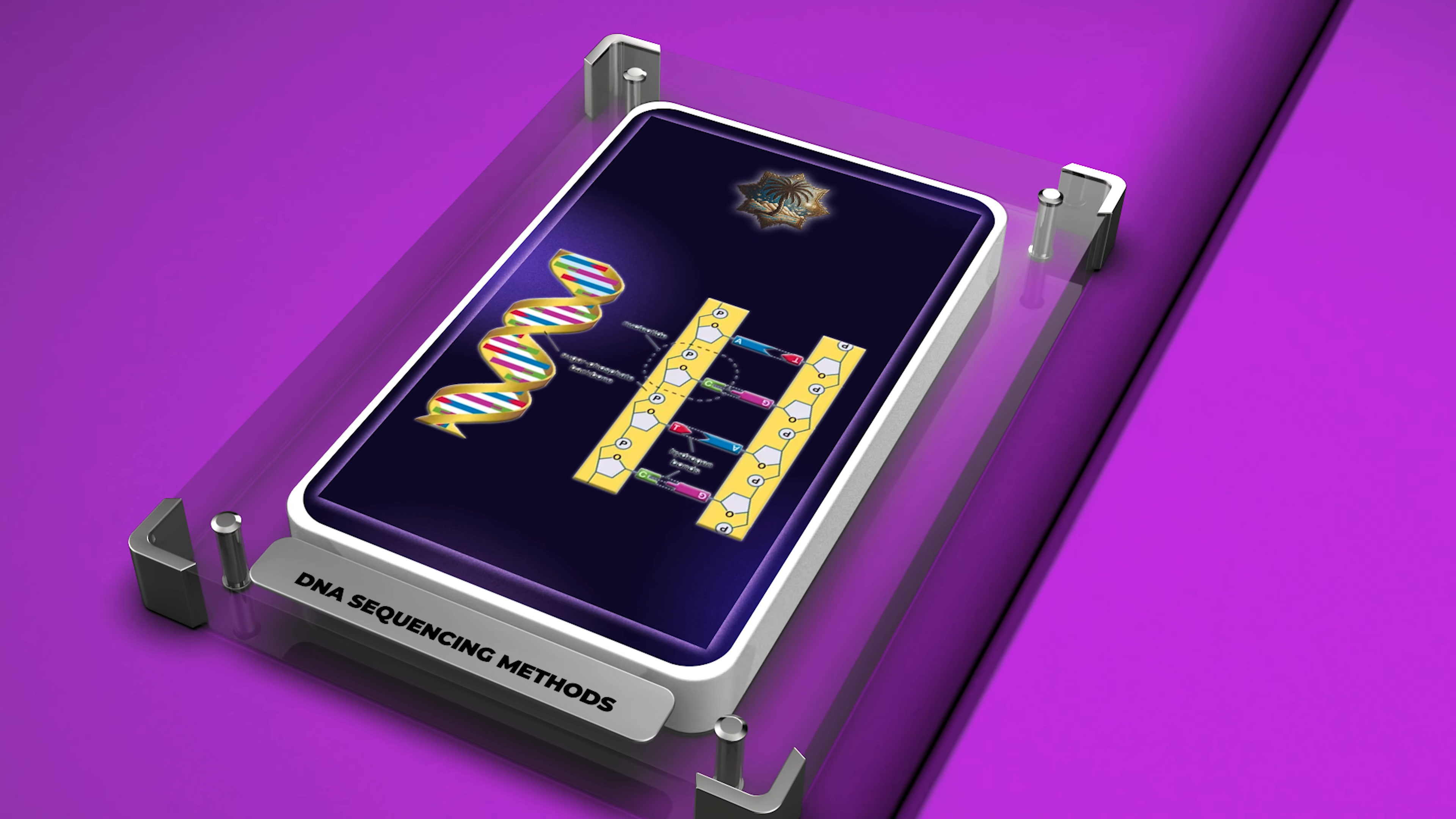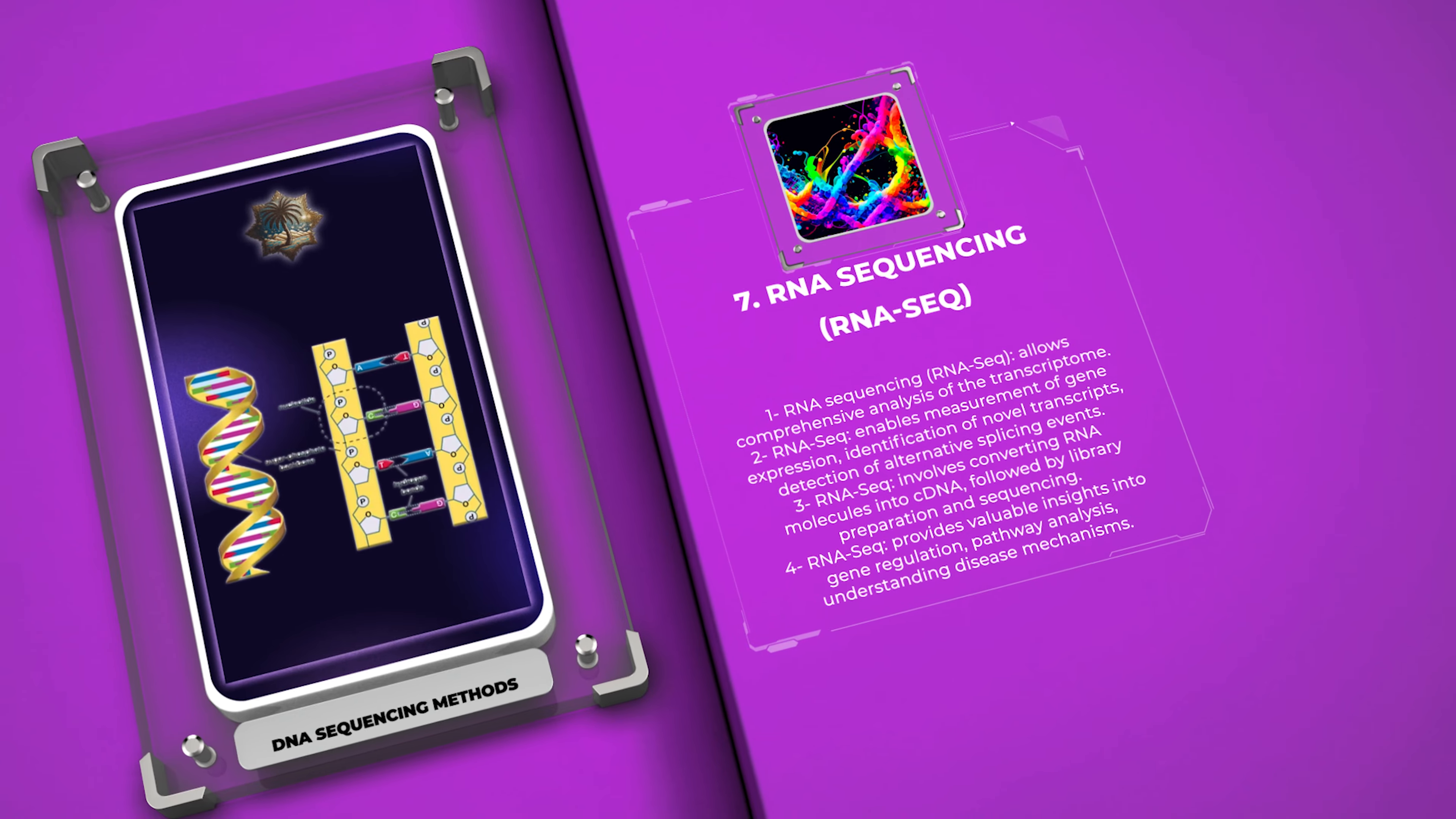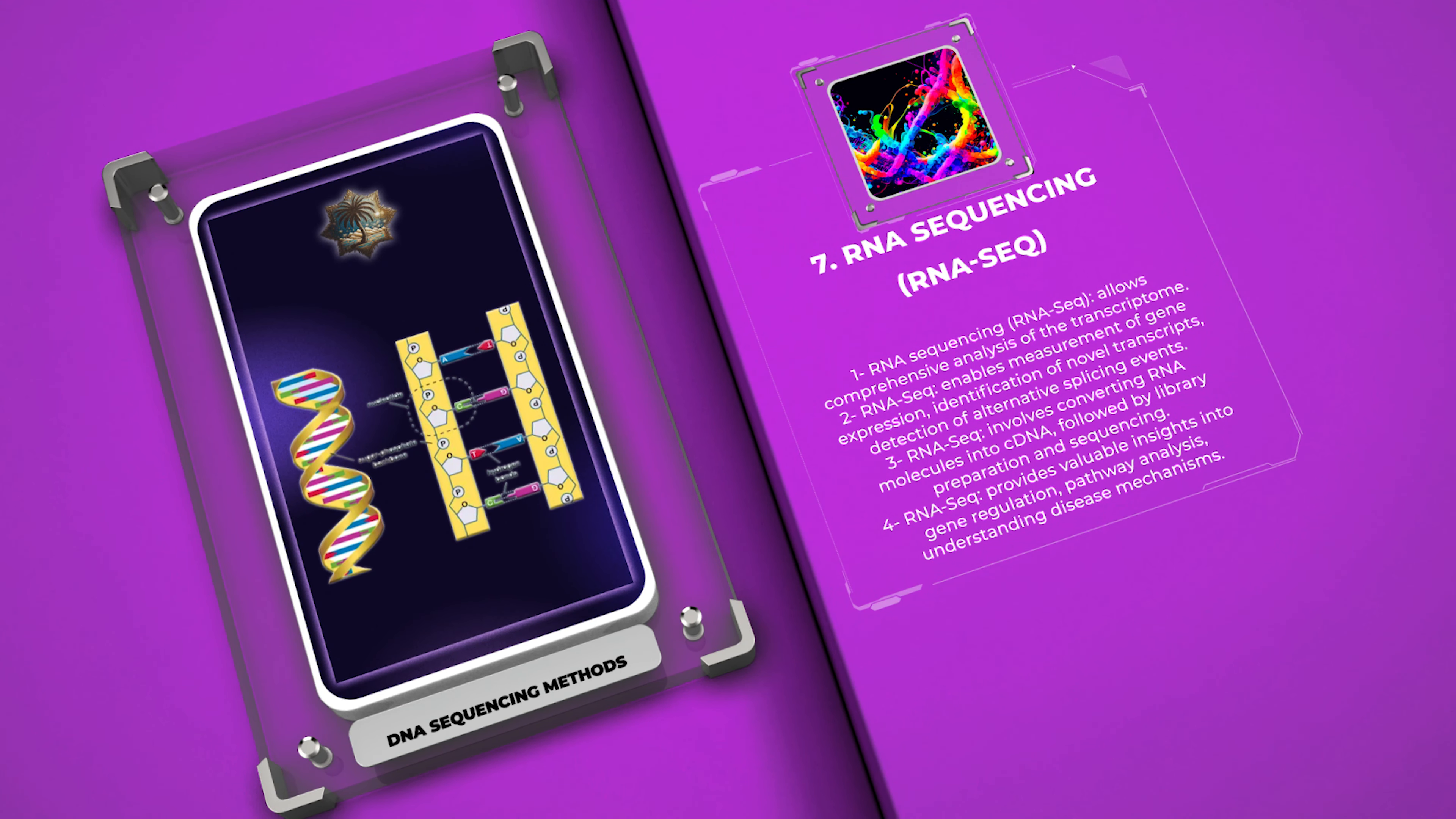RNA sequencing, commonly known as RNA-seq, allows the comprehensive analysis of the transcriptome by sequencing RNA molecules. This technique enables the measurement of gene expression, identification of novel transcripts, and detection of alternative splicing events. RNA-seq involves converting RNA molecules into complementary DNA, cDNA, followed by library preparation and sequencing. It provides valuable insights into gene regulation, pathway analysis, and understanding disease mechanisms.